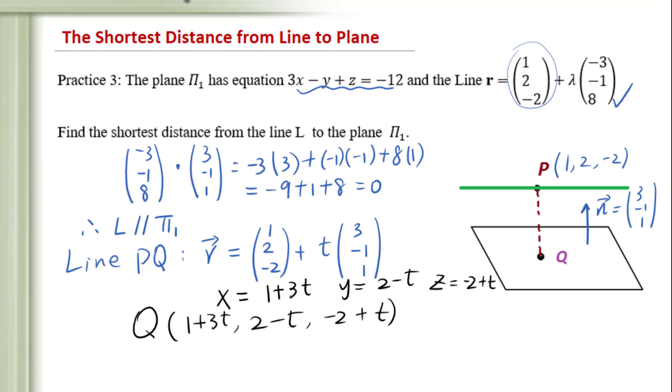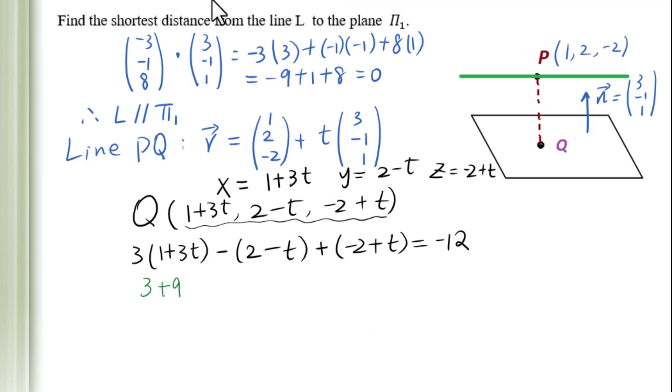Since Q is on the plane, we will substitute the coordinates of Q for x, y, z: 3(1 + 3t) minus (2 - t) plus (-2 + t) equals -12. Solve this linear equation for t: 3 + 9t - 2 + t - 2 + t equals -12.